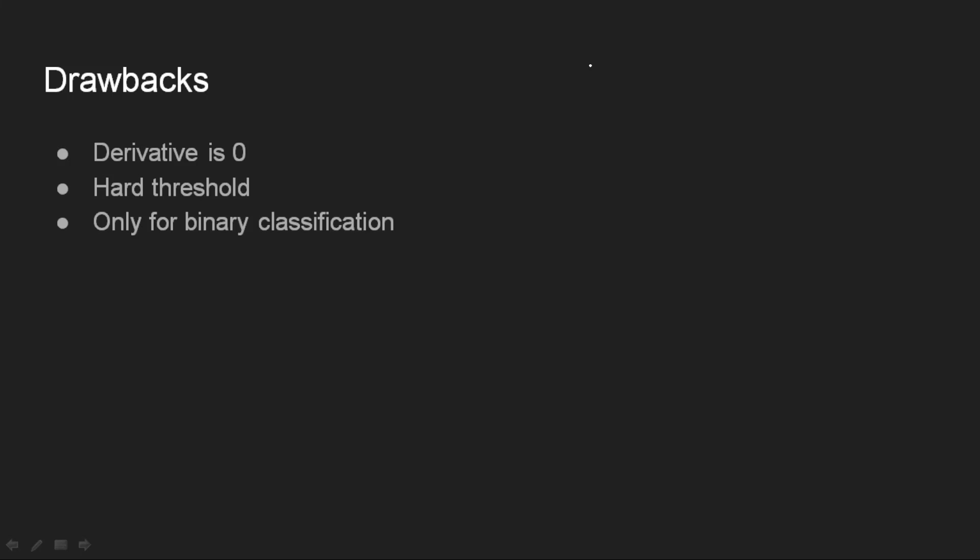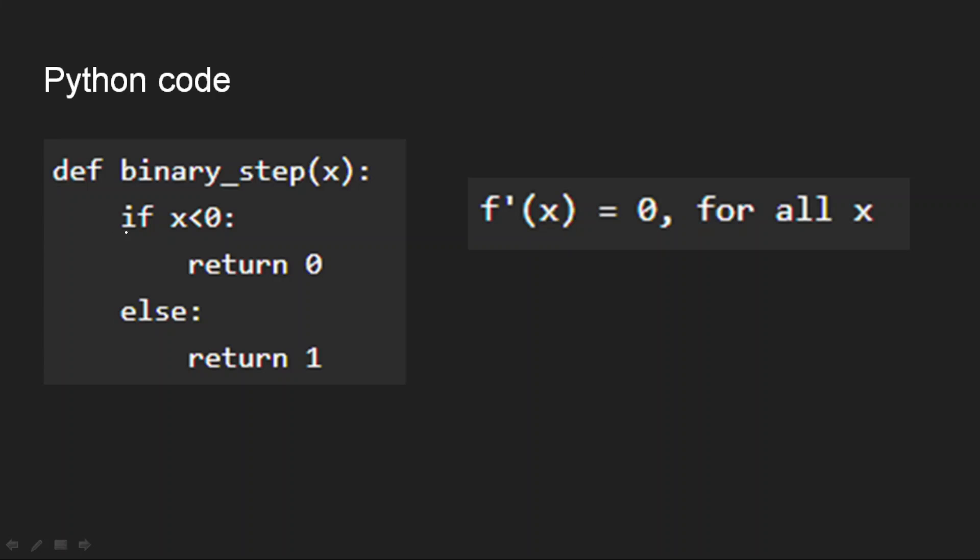So yeah, derivative is 0 and hard threshold and only used for binary classification. These are the drawbacks. If you see the Python code, basically it is very simple. If it is less than 0 then you return 0, otherwise you return 1. It's quite simple. And yeah, as we have seen for all the x values, my derivative is 0 because it's a constant value. So this is the Python implementation, it's very simple.